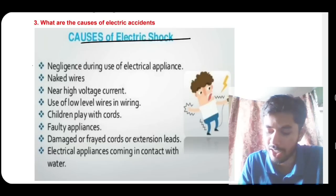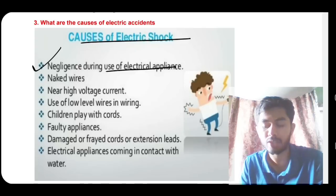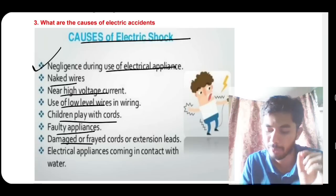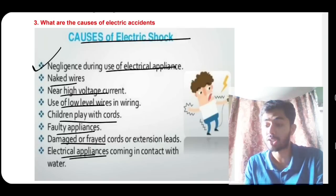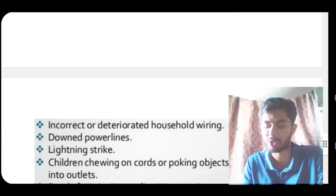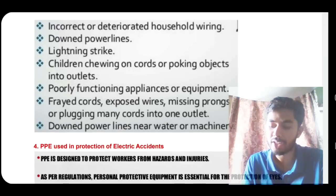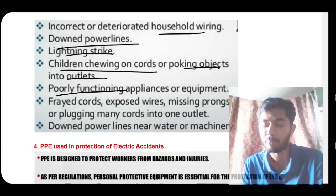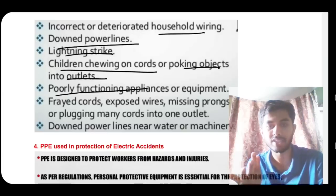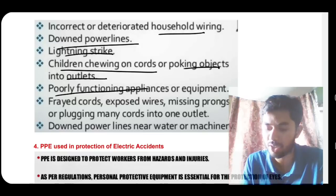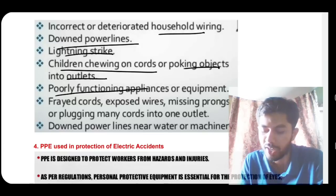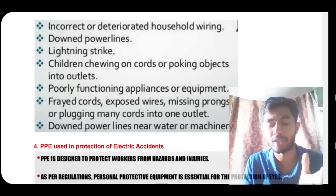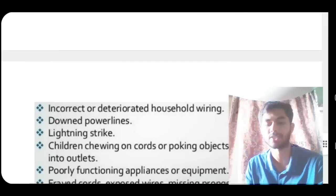Causes of electric shock: negligence during use of electrical appliances, naked wires, high voltage low-level wires, children playing with cords, faulty appliances, damaged freight cords, electrical appliances coming in contact with water (which is a good conductor), incorrect or deteriorated household wiring, downed power lines, lightning strikes, children chewing on cords or poking objects into outlets, and poorly functioning appliances.